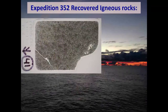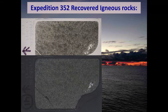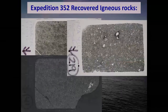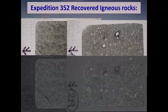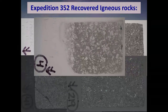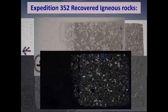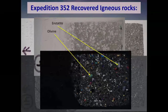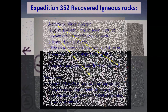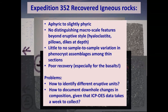Distinguishing the rock types was a problem. Thin sections helped somewhat — here are whole-section macroscopic images. Looking at basalts in cross-polar and plane-polarized light, they're not all that exciting. A boninite, though, has phenocrysts and is a bit more colorful — olivine and enstatite are pretty obvious to pick out. But overall, the samples are aphanitic to slightly phyric in hand sample with really no distinguishing macro-scale features. Most variation was alteration. There was really no sample-to-sample variation in assemblages, and crappy recovery made it challenging to identify different eruptive units and document stratigraphy and downhole compositional changes.